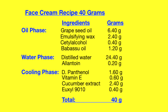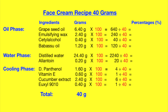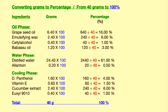Here we have a recipe of 40 grams. To convert these 40 grams to percentage, take the amount of each ingredient in grams, multiply it by 100, then divide the result of the multiplication by 40, and you get the answer, which is the percentage. Let's do it step by step using this chart.